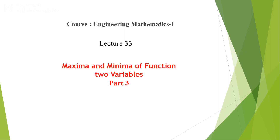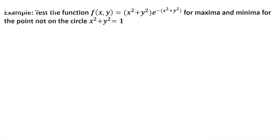Lecture 33: Maxima and Minima of a Function of Two Variables, Part 3. We test the function f(x,y) = (x²+y²)e^(x²+y²) for maxima and minima, for those points not on the circle x²+y²=1. To find the maxima and minima, we first find the partial derivatives.